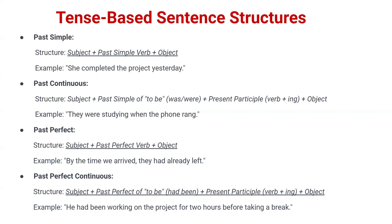Now let's understand the structure of past perfect continuous: subject + past perfect of 'to be' (had been) + present participle (verb+ing) + object. In past perfect continuous we use 'had been' and add 'ing' to the verb. For example: 'He had been working on the project for two hours before taking a break' — 'had been' is used, and 'working' is 'work' with 'ing' added.